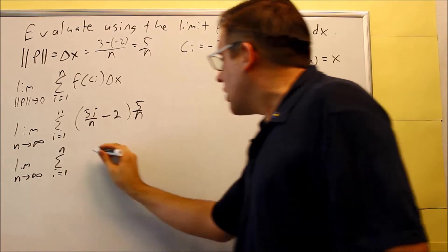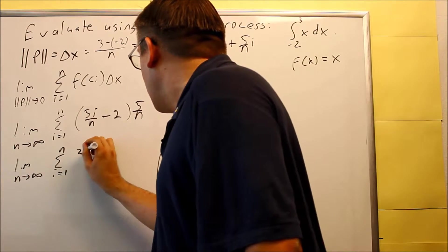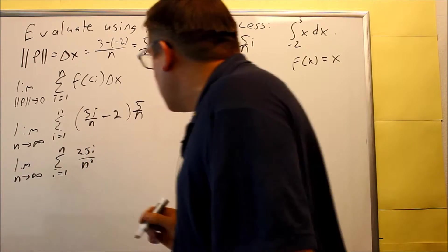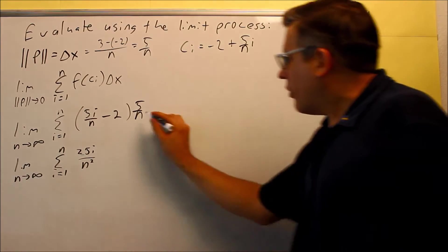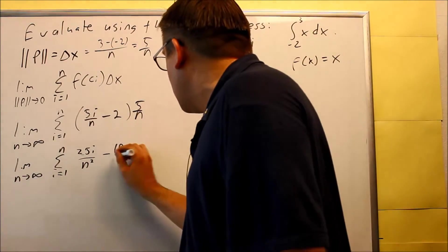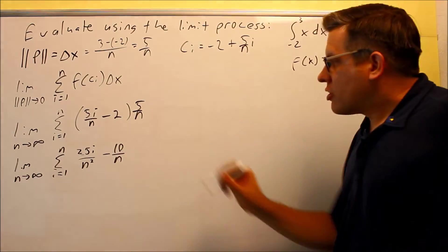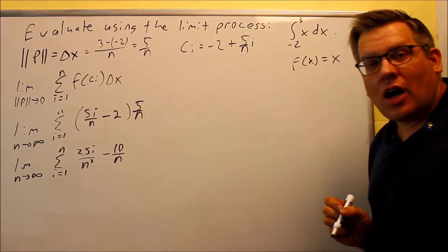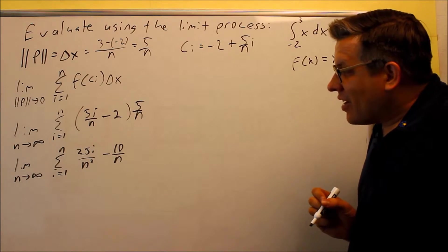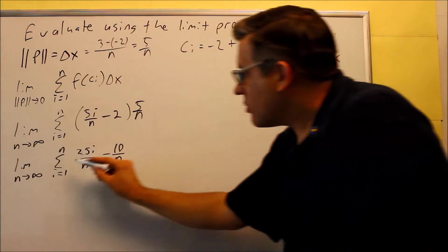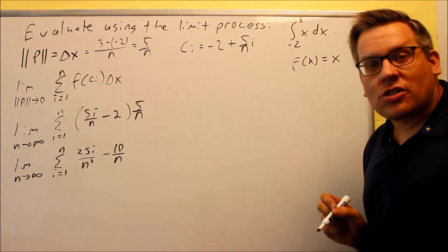So, I'm going to multiply into each thing. So, I'm going to get 25i over n squared when I multiply that one. And then, if I multiply this, I get minus 10 over n. So, I just multiply both of them by 5 over n. Now that I have that complete, what I want to do is apply the summation to each thing individually.